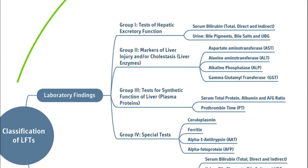Classification based on laboratory findings has four groups. Group 1: hepatic excretory function — serum bilirubin, urine bilirubin, bile pigments, and bile salts fall under this category. Group 2: markers of liver injury and cholestasis — enzymes like AST, ALT, and gamma glutamyl transferase come out of damaged liver cells; measuring their activity gives an idea of the extent of injury.